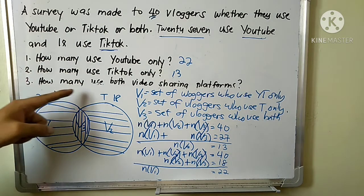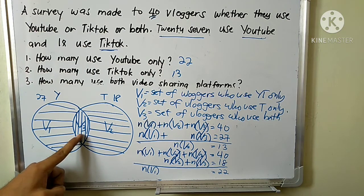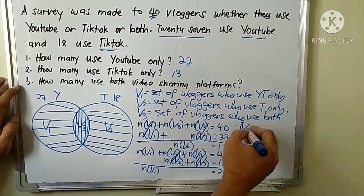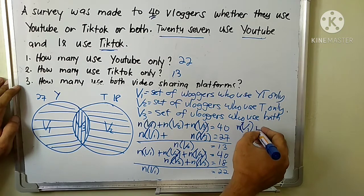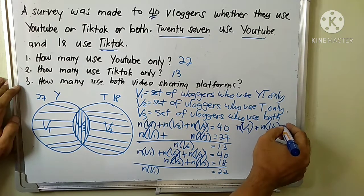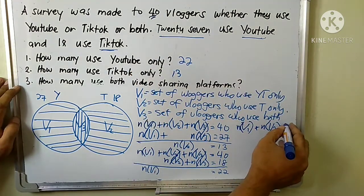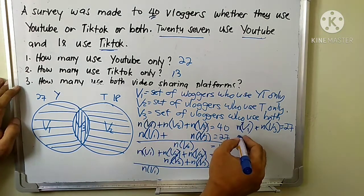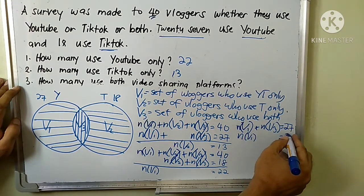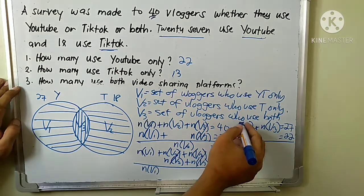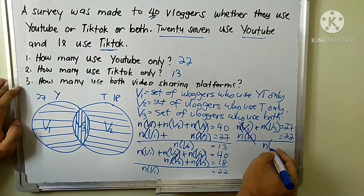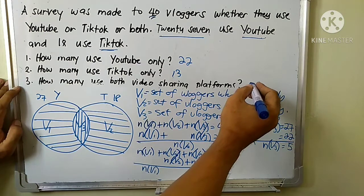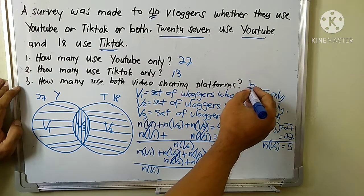For the last question — how many use both video sharing platforms — we solve for v_sub3. Using the equation: cardinality of v_sub1 plus cardinality of v_sub3 equals 27, and since v_sub1 equals 22, we substitute and cancel to get the cardinality of v_sub3 equals 5. So 5 vloggers use both platforms — that answers question number three.